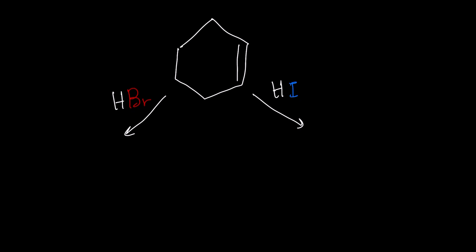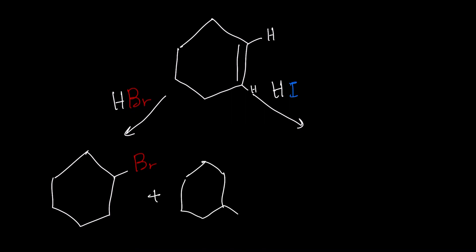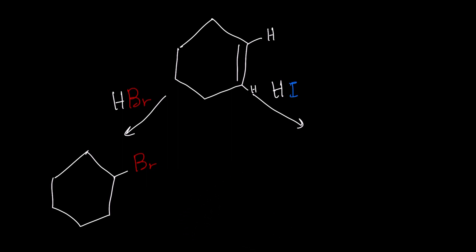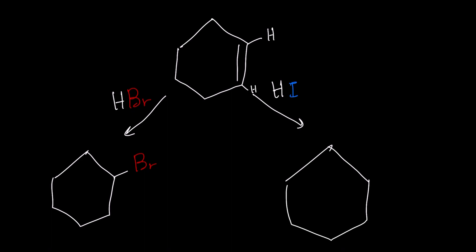In both cases, both of the carbons across the double bond are going to have one hydrogen, so you're not going to have a minor and a major product — it's just going to be one product. If you notice, the two possible structures are technically the exact same structure; if you just rotate one a little bit, you get the other. So your final answer can be just that one structure. The same applies for the iodine version — the only difference is that you have an iodine on the carbon as opposed to a bromine.